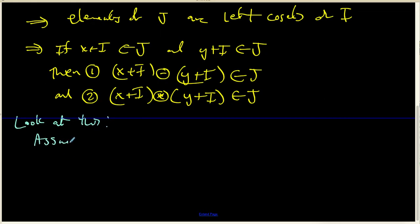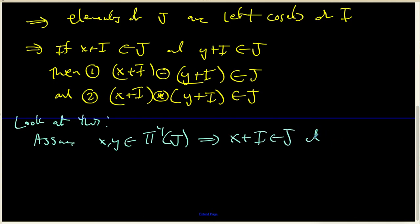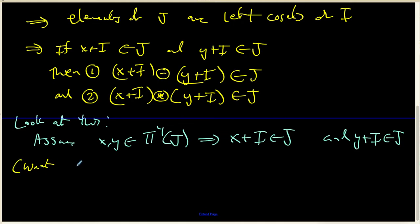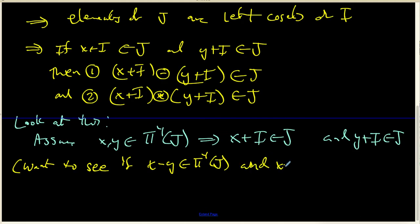Assume that x and y are inside the pre-image of J. That tells us x plus I belongs to J and y plus I belongs to J. Now I want to see if x minus y belongs to the pre-image of J, and if x times y belongs to the pre-image of J. Because if both those things are true, then the pre-image of J is going to be a subring over in the ring R.